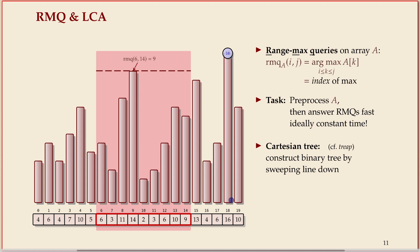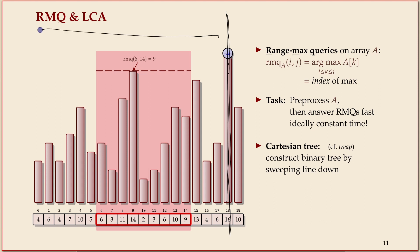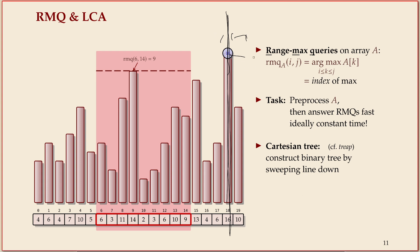The Cartesian tree results as follows. You have a root node at the overall maximum — that's this position in our example. And then that basically splits the problem into two halves: everything to the left and everything to the right. In this case, the right part is tiny, but in general it's two parts. Then you compute recursively the same Cartesian tree on these two subproblems.